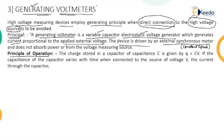The principle of the generating voltmeter: a charge Q stored in a capacitor of capacitance C is given by Q = C × V. If the capacitance varies with time when connected to source voltage V, the current through the capacitor is given by I = dQ/dt.